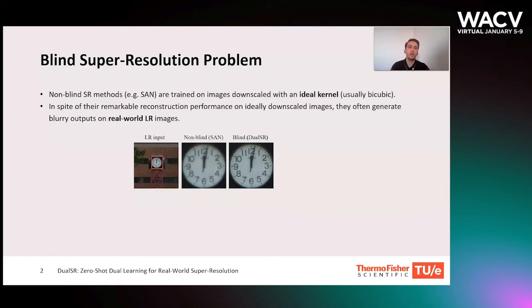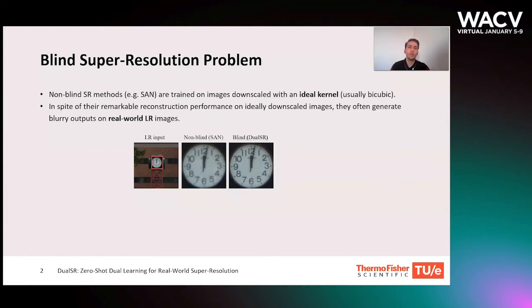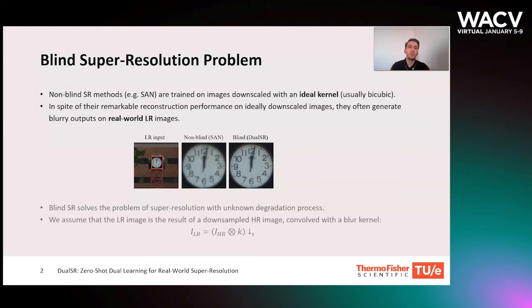This is because for real-world images, the degradation process is more complex than bicubic interpolation. On the other hand, if we use a blind super-resolution method like our Dual SR, we will get sharper and better quality results. Blind SR solves the problem of super-resolution with an unknown degradation process.